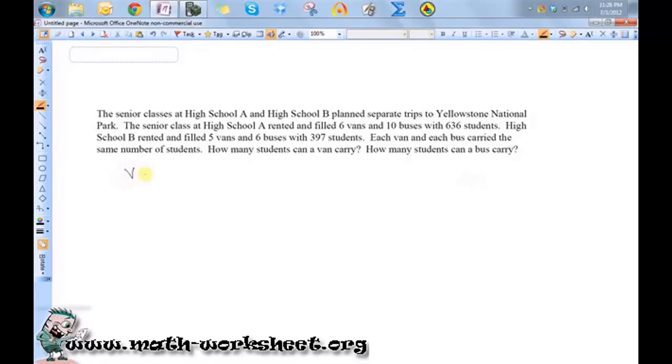So I'm going to start by letting v equal the number of students in a van. And b is going to be the number of students in a bus. So I'm going to use the ditto marks here so I don't have to write that again.